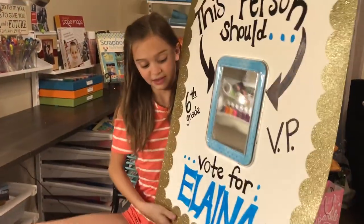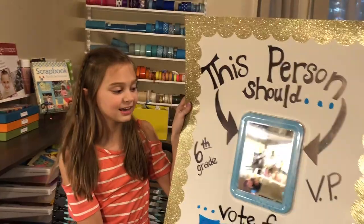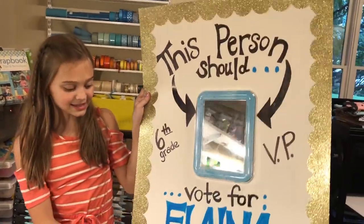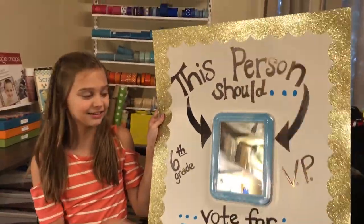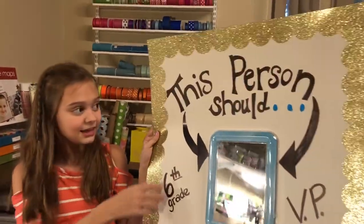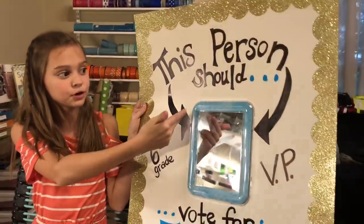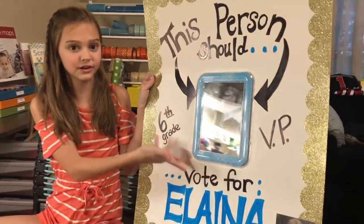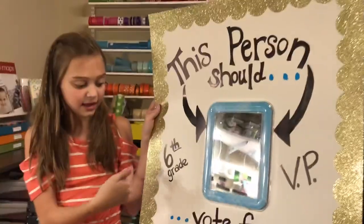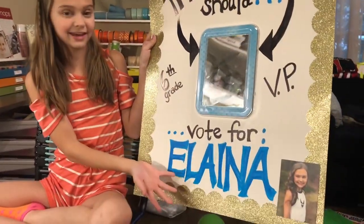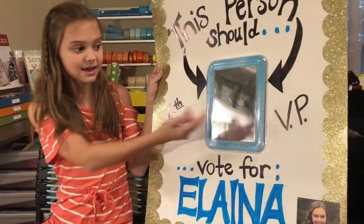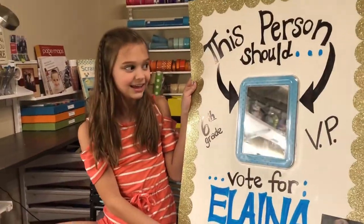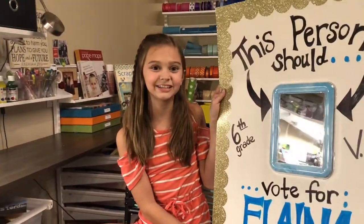The next poster is one of my favorites, and I love it because it has gold on the rim — I love gold and glitter. And then here it says 'this person should' with a mirror, so they're looking at it, and then 'vote for Elena,' so they should vote for me. And then 6th grade VP and a picture of me. I really like this poster.